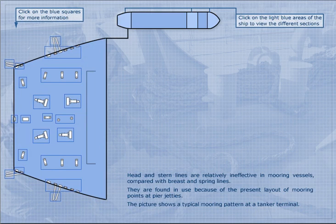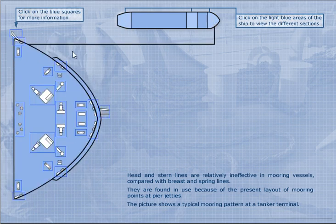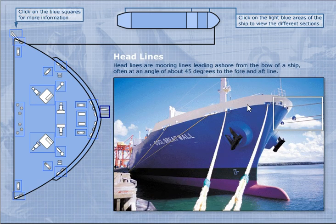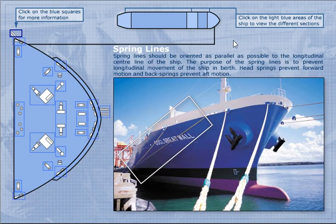Looking at a typical mooring arrangement of a ship, here is the fore part and here is the aft part. In this area you can find two types of lines. Headlines are mooring lines leading ashore from the bow of a ship, often at an angle of about 45 degrees to the fore and aft line.